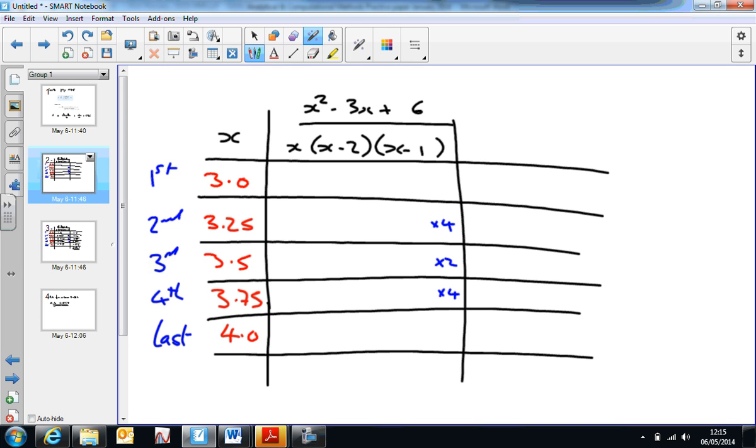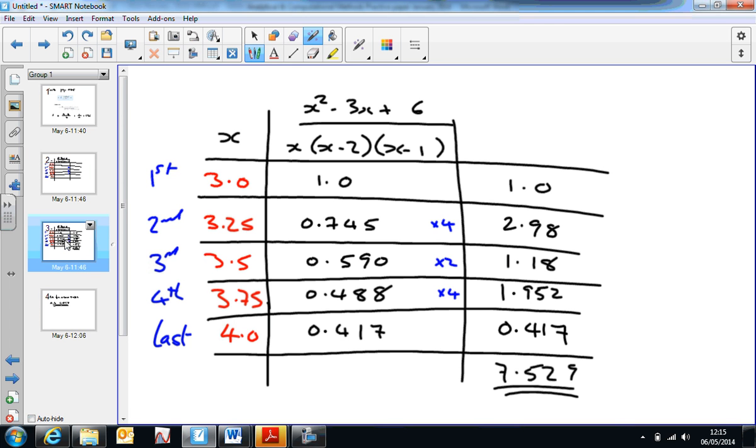So let's have a look at the solution in the table. So for each of the values, what I've done is I've worked out what the value of the function is, for x equals 3, and x equals 3.25, and so on. Here are the solutions.